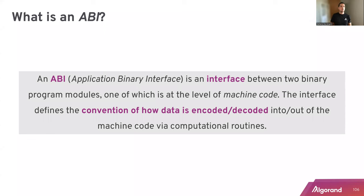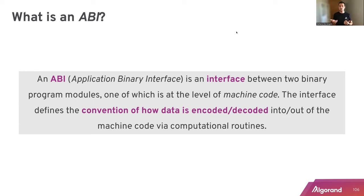So first of all, what is an ABI? ABI stands for Application Binary Interface. It's indeed an interface between two components — two components which are program modules. One of these modules is usually working at the machine code level. And this interface defines the convention on how data should be passed between the components and the encoding and decoding of the data.